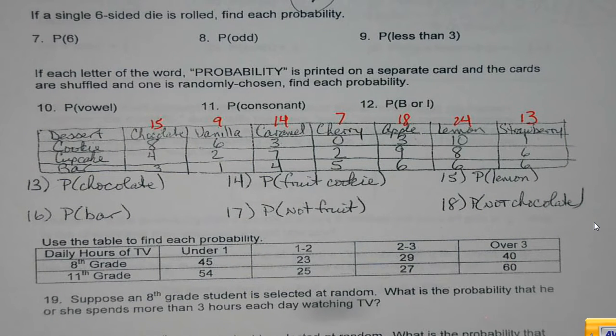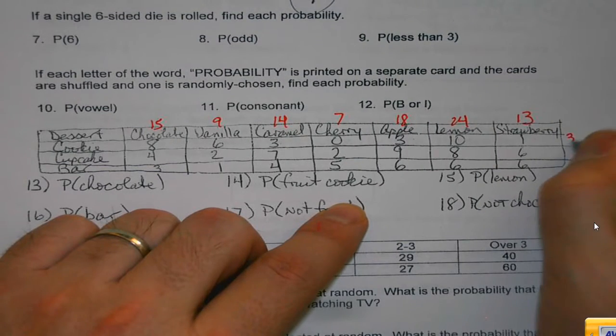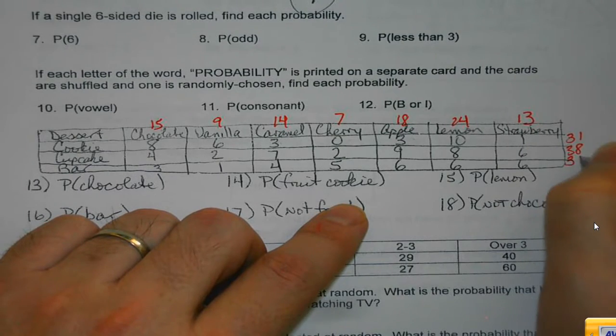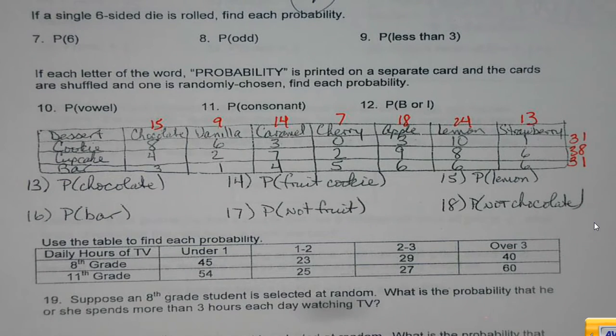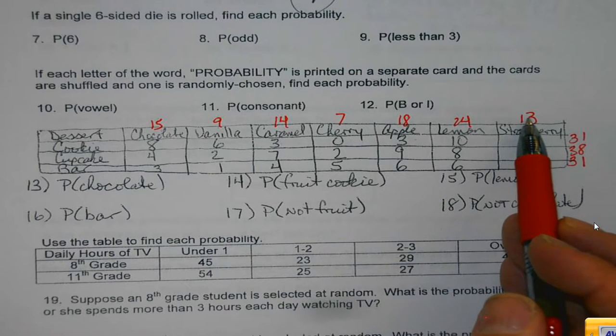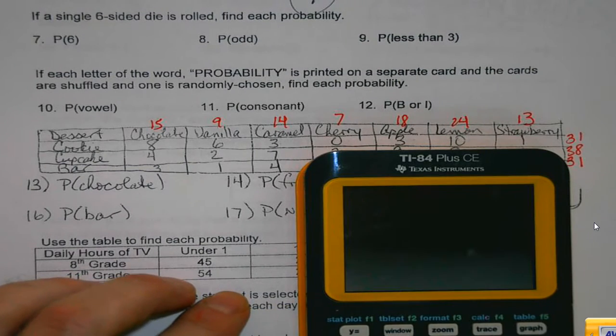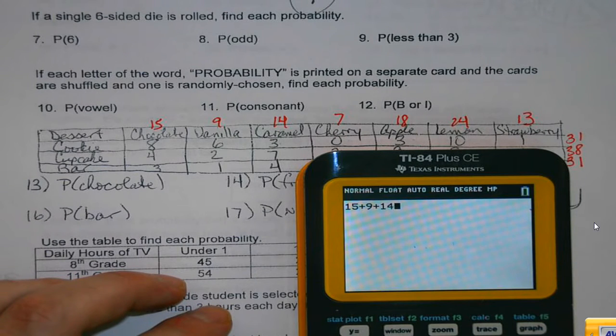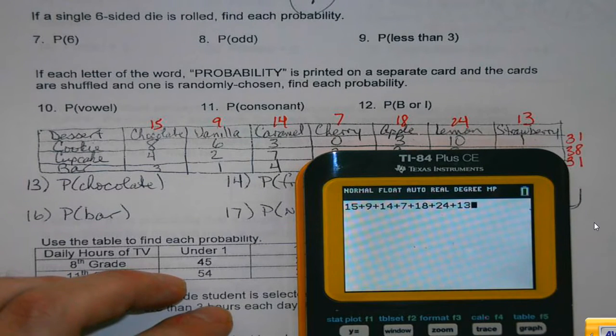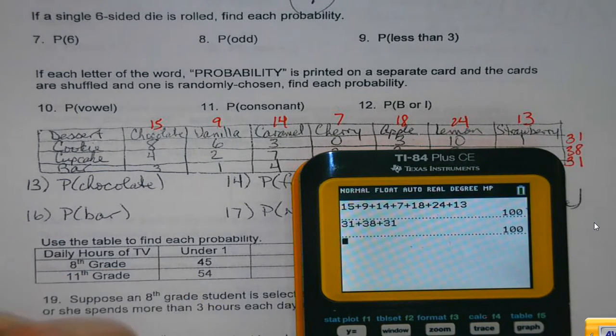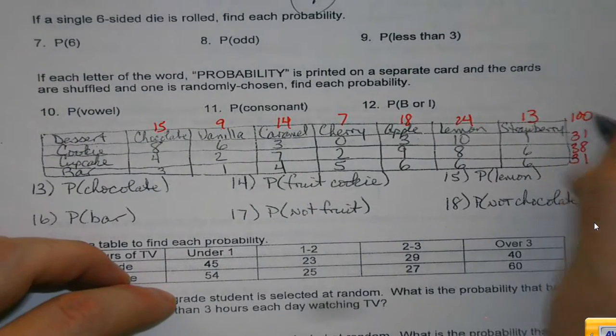So, I'm going to add up all my chocolates, add up all my vanillas, add up all my caramels, and cherry, and apple, and lemon, and strawberry. Just adding the numbers up in each column. And I'm also going to do it in each row for my cookie, for my cupcake, and for my bar. And what should happen if I did this correctly is that all of my columns, if I add those up, and all of my rows, if I add them up, should get the same number. It's kind of my double check to make sure I did this right. I got 100 going each way. So, I'm going to make note of that here.